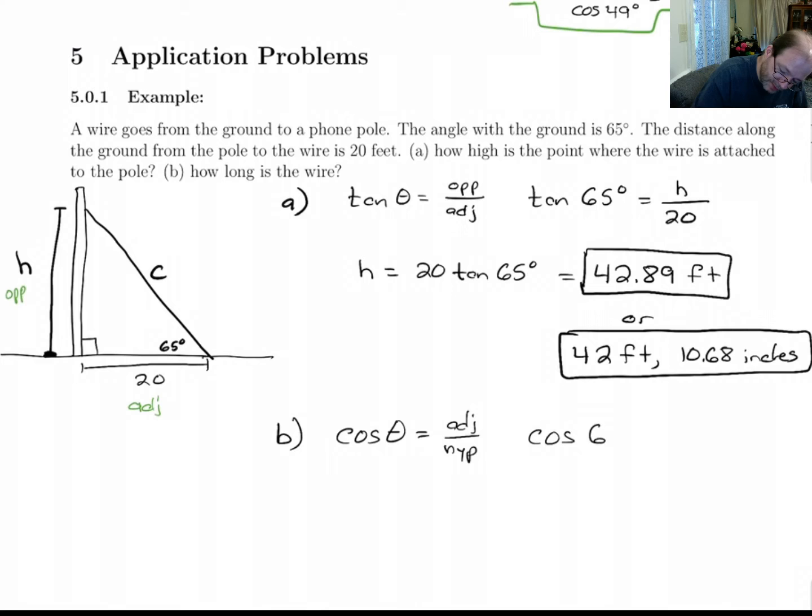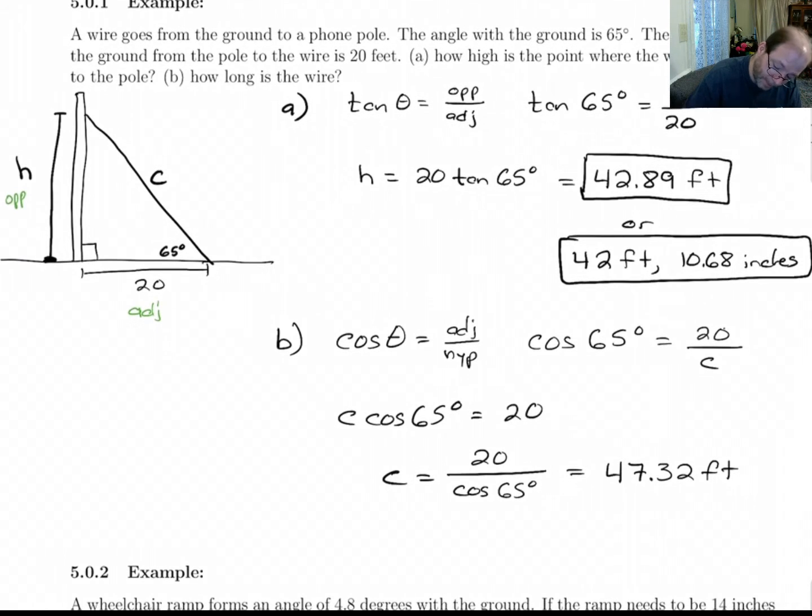So cosine of theta, cosine is adjacent over hypotenuse. So what we get here is cosine of 65 degrees is the adjacent side over the hypotenuse, which is C. And C is what we're trying to find. So C cosine 65 equals 20. So C is equal to 20 over cosine 65 degrees. So 20 divided by cosine of 65 is 47.32 feet. Or if we wanted to change it to feet and inches, it's 47 feet. Then 0.32. I'll take the 0.32 and multiply that by 12. And I get 3.84. Alright. And that's it.